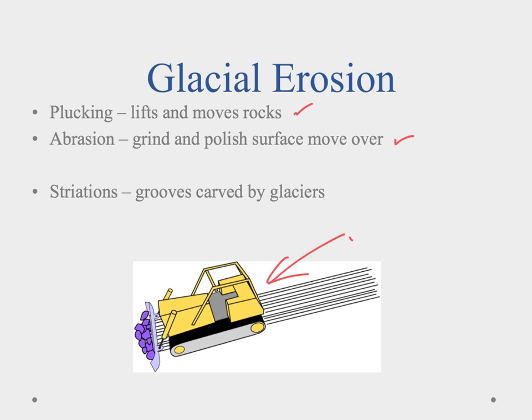One of the key things that we'll notice are these striations. Striations are these grooves carved by glaciers — you can see them back here. As these glaciers are moving, sometimes they'll carry something large enough that it'll just leave a groove through the surface, or the glacier itself will groove the surface, and you can kind of see where they are and how they moved.